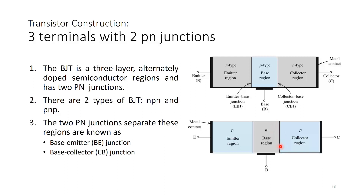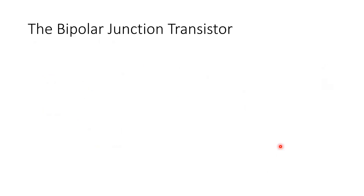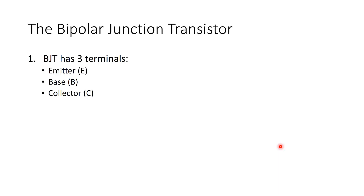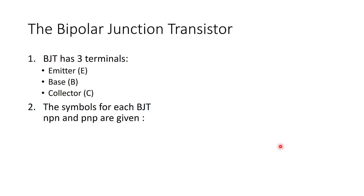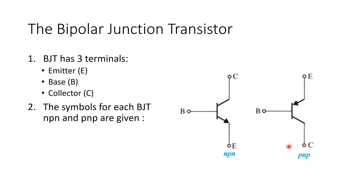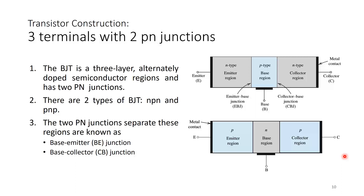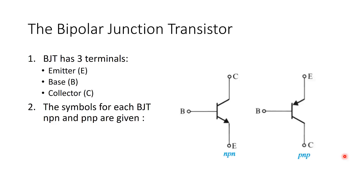The two PN junctions separate the regions into the emitter-base junction (EB junction) and the base-collector junction (CB junction). The BJT has three terminals — emitter, base and collector. The circuit symbols for NPN and PNP BJTs are given. The arrow on the symbol differentiates NPN from PNP: for NPN the arrow leaves the base, and for PNP the arrow goes into the base.